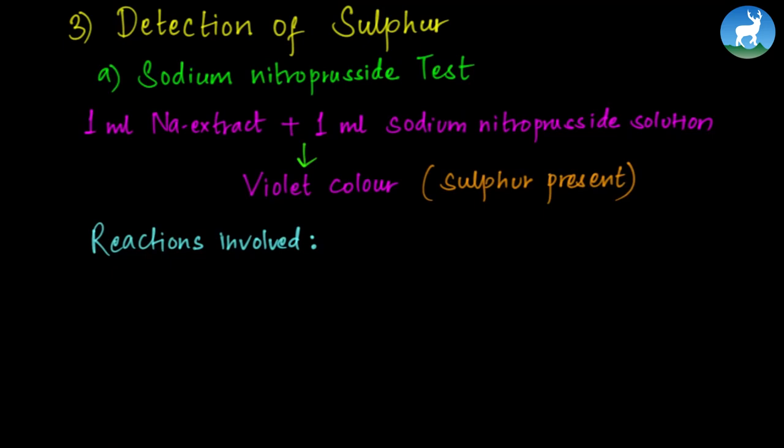The third step is detection of sulfur. Sulfur can be detected by two methods. The first method is the sodium nitroprusside test. Take sodium extract and add 1 mL sodium nitroprusside solution. If violet color forms, it indicates sulfur presence.